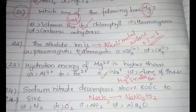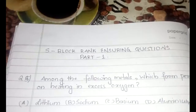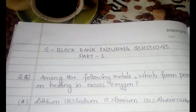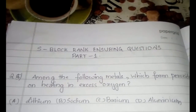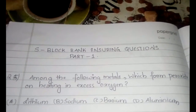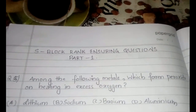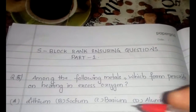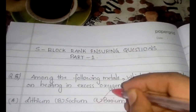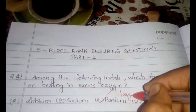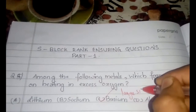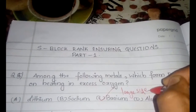The final 25th question: which of the following metals forms a peroxide on heating in excess oxygen? The answer is barium, and it is due to its large size.